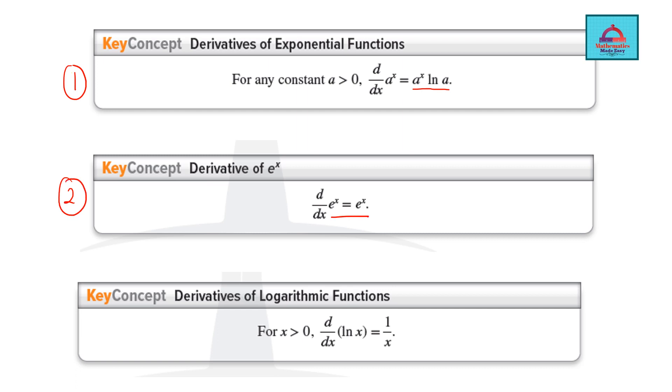Next is the derivative of e to the power x. Remember, exponential function always has the same derivative, so d by dx does not affect e to the power x—it is e to the power x only. Then derivative of logarithmic function: d by dx of ln x, which is log x natural log x, is 1 over x. These are formula sheets we will be using today.